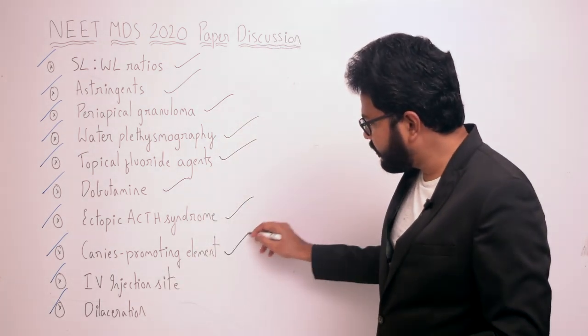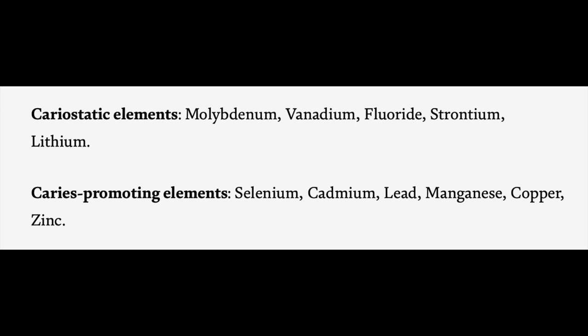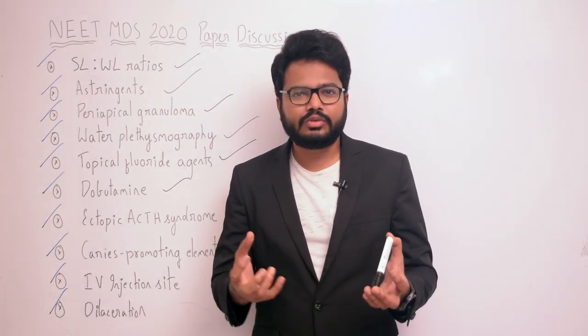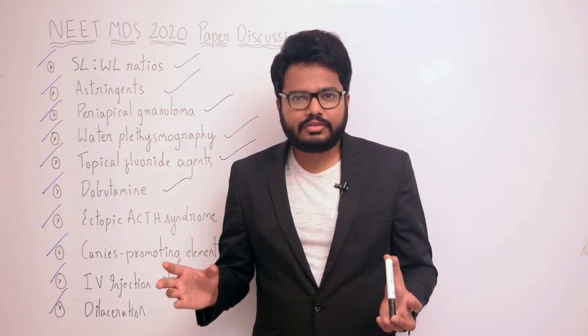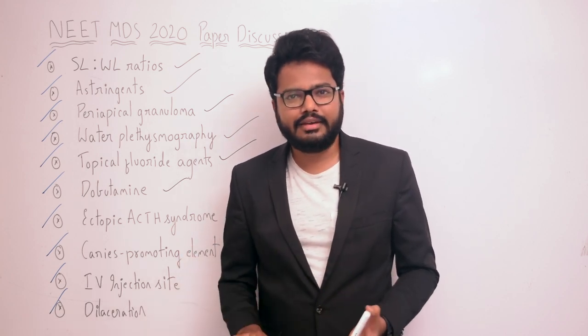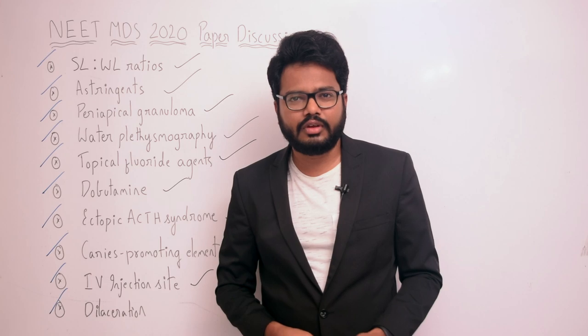Moving on to caries-promoting and cariostatic trace elements. Cariostatic elements include molybdenum, vanadium, fluoride, strontium, and lithium. Caries-promoting elements include selenium, cadmium, lead, manganese, copper, and zinc. Notably, selenium makes teeth susceptible to caries attack, though the mechanism has not been fully explained and further studies are needed.